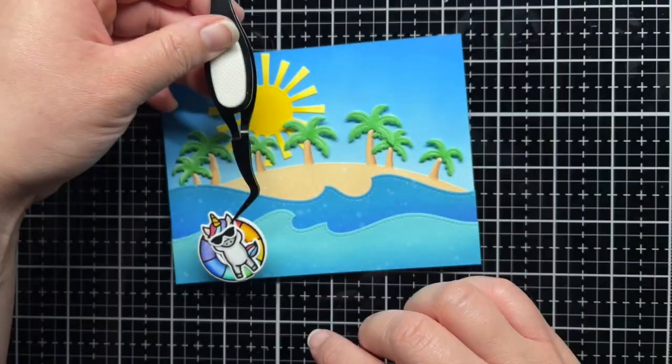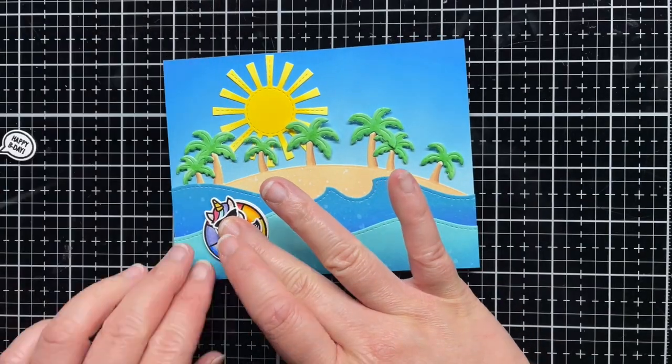I use foam mounting tape to adhere the inner tube, speech bubble, and sentiment labels for a little extra dimension.